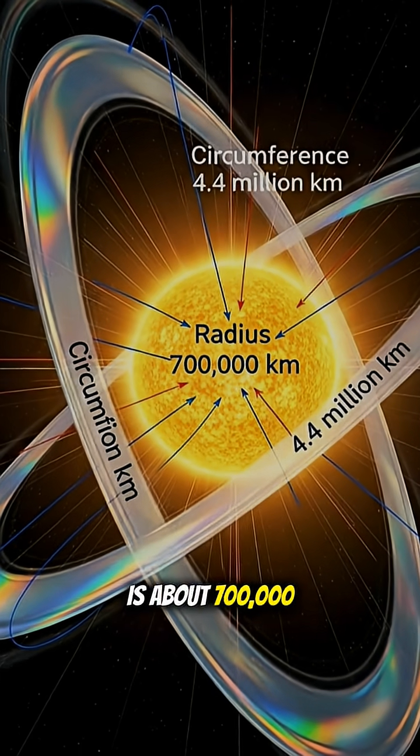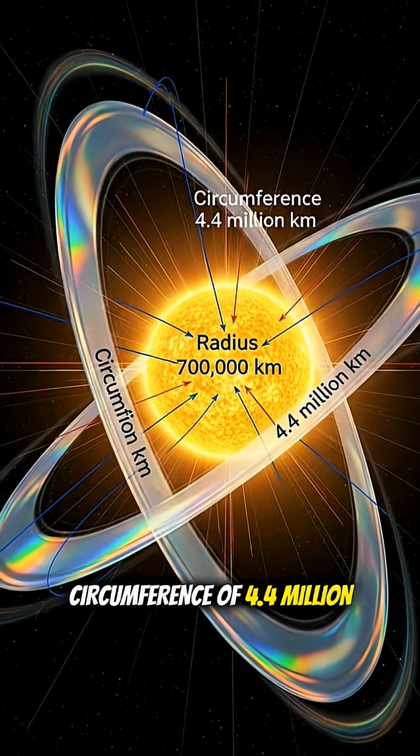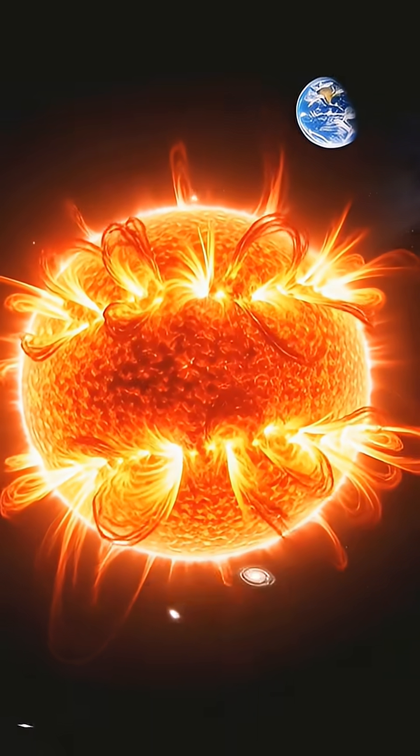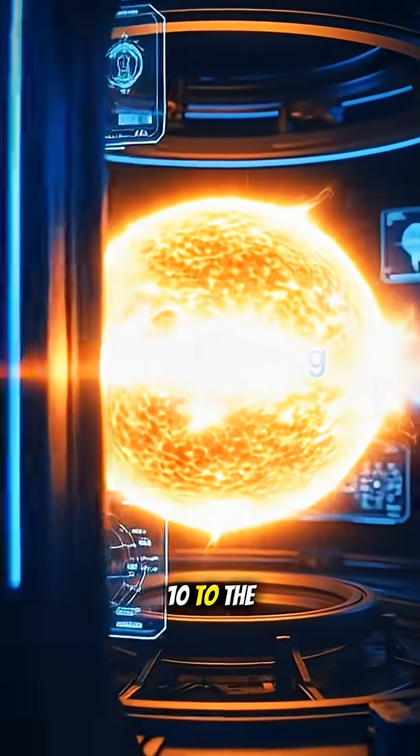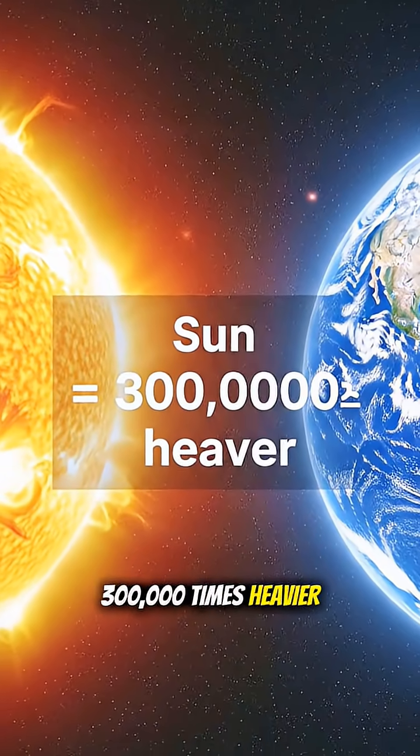The Sun's radius is about 700,000 kilometers, giving it a circumference of 4.4 million kilometers. That's 100 times bigger than Earth's. With a mass of 2 times 10 to the 30 kilograms, the Sun is 300,000 times heavier than Earth.